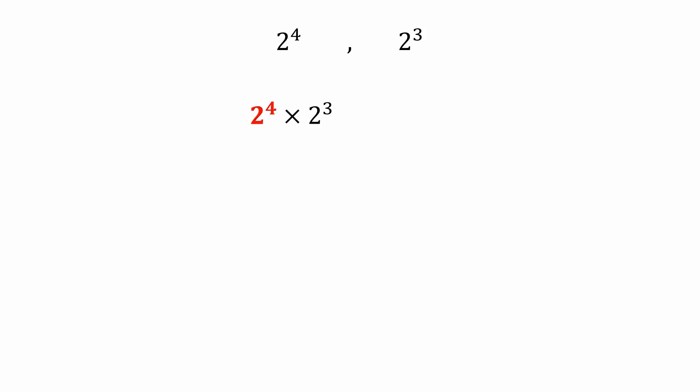2 raised to the power 4 means that 2 is multiplied by itself 4 times. Similarly, 2 raised to the power 3 means that 2 is being multiplied with itself 3 times. This result is equal to 2 raised to the power 7.